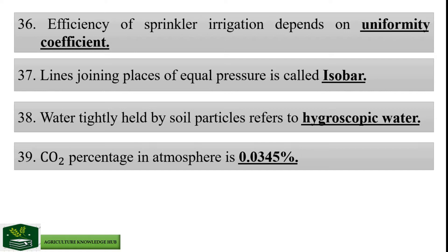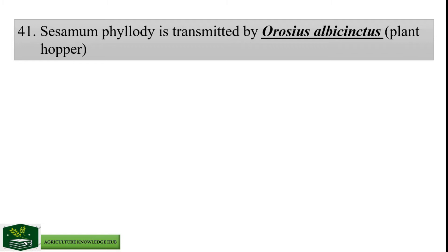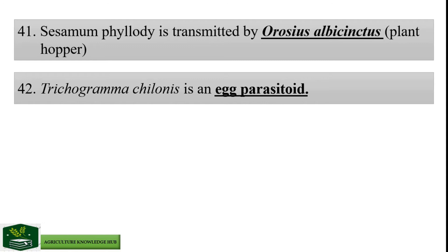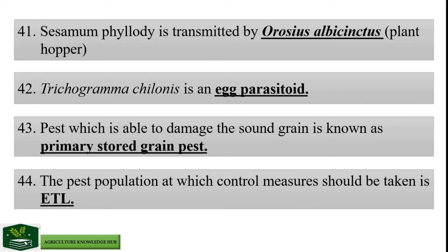Right mandible is absent in thrips. Sesamum phyllody is transmitted by Orosius albicintus, which is known as plant hopper. Trichogramma chilonis is an egg parasitoid. Pest which is able to damage the sound grain is known as primary stored grain pest. The pest population at which control measures should be taken is ETL, which stands for Economic Threshold Level.